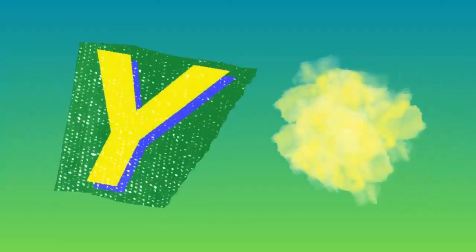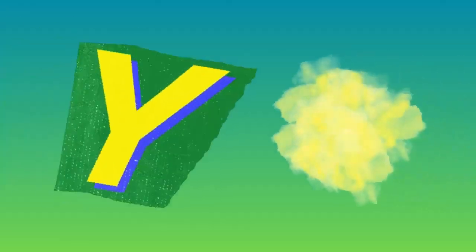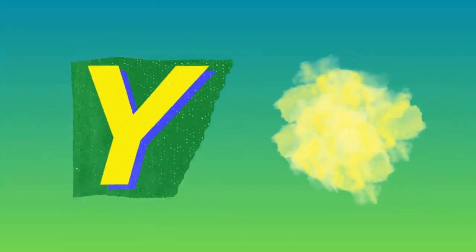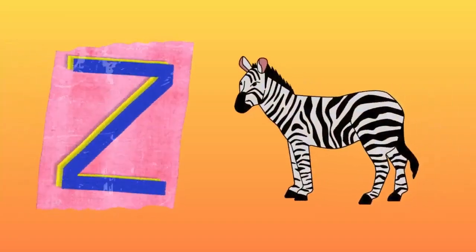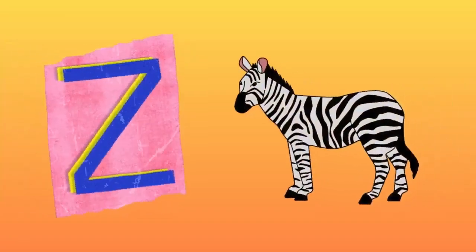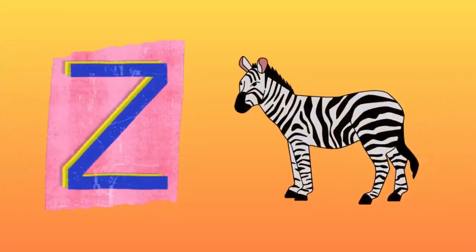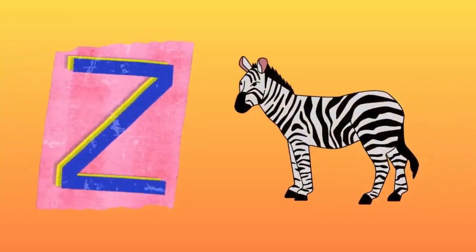Y is for yellow, y-y-yellow. Z is for zebra, z-z-zebra.